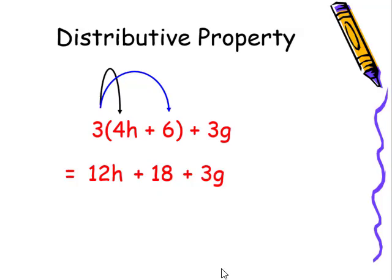Now in mathematics, we like to put everything in order. So the first thing we always do is put our variables first. We also put them in degree order. That would be a later lesson. But right now, we wanna just make sure we put it in alphabetical order once we put the variables first. Since G comes before H in the alphabet, we would say three G plus 12H plus 18.